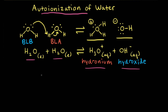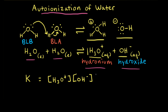We can write an equilibrium constant expression for this reaction. K is equal to the concentration of hydronium ions — raised to the first power, since the coefficient in the balanced equation is one — times the concentration of hydroxide ions raised to the first power. For the reactants, liquid water is left out of the equilibrium constant expression.